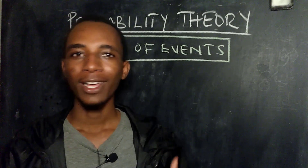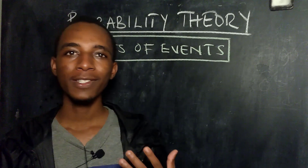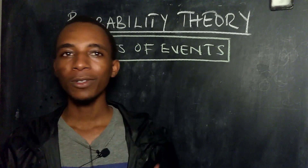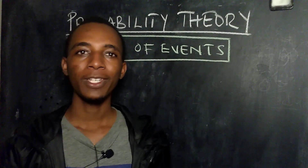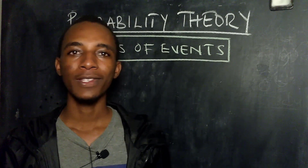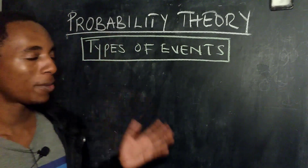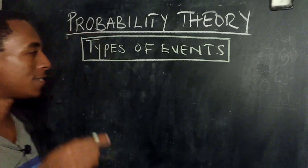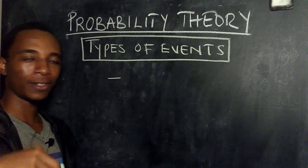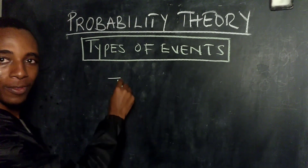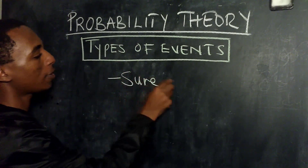We are always working with events in probability. So let's go through the various types of events and where necessary we'll talk about a few of their properties, which will be useful later in the course as we start to do some numerical examples. The first type of event I want to talk about is what we call sure events.